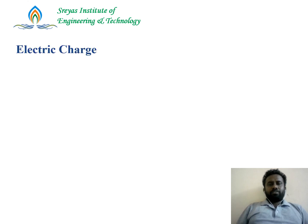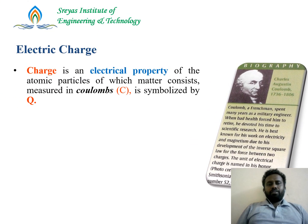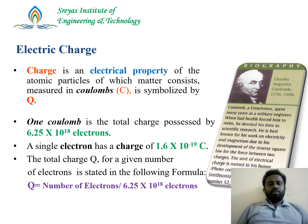Let's start from the fundamentals. What is an electric charge? The charge is the electrical property of atomic particles. It is denoted by Q and the units are coulombs. One coulomb is the total charge possessed by 6.25 × 10¹⁸ electrons. That is, a single electron has a charge of 1.6 × 10⁻¹⁹ coulombs. The total charge for a given number of electrons is given by the number of electrons divided by 6.25 × 10¹⁸.